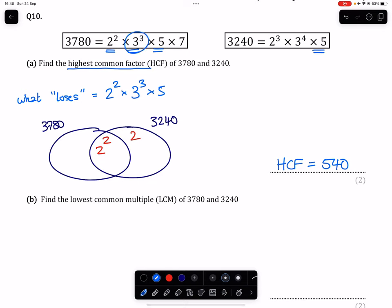We're going to have three 3s in common, but 3,240 is going to have one spare. Again, we have a 5 each, which means that's going to go in the overlap.